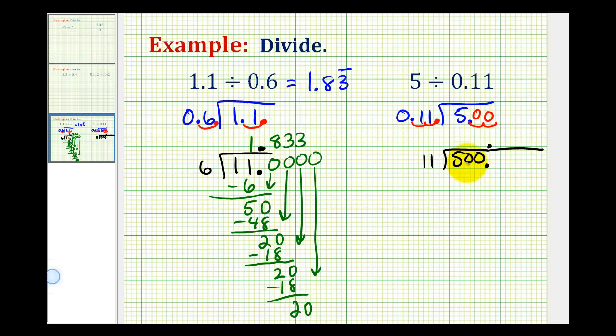Now we'll determine how many 11's there are in 50. That would be 4. 4 times 11 is 44. We subtract. That's going to be 6. Bring down the next digit, which is 0. How many 11's in 60? That's going to be 5. 5 times 11 is 55. We subtract. That's going to be 5. Again, we can't stop here, so we have to start adding zeros to the right of this decimal point.